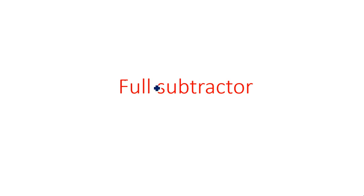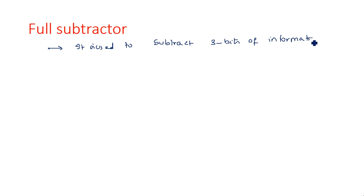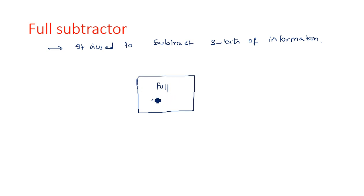In this video, I am going to design a full subtractor. A full subtractor is used to subtract three bits of information. It is like your half subtractor is like your half adder, and full subtractor is like your full adder. So a full subtractor needs three inputs.